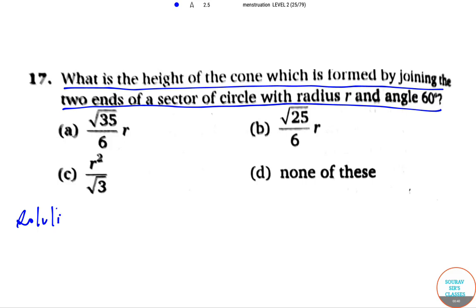Let's see what the answer is. The arc of a sector is equal to 2 pi r into 60 by 360.